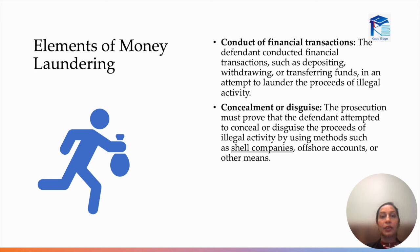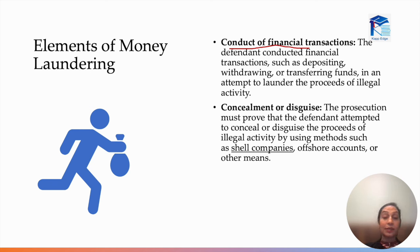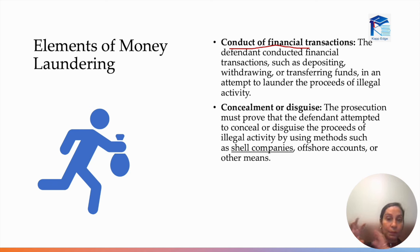The next element is conduct of a financial transaction. If Mr. A has money from drug trafficking but kept all the cash in his house, it is not money laundering. Why? Because he has not tried to convert it through any financial channel. Money laundering requires that a person should try to deposit, withdraw, or conduct some transaction via a financial channel. That is one more element. And then comes concealment or disguise.